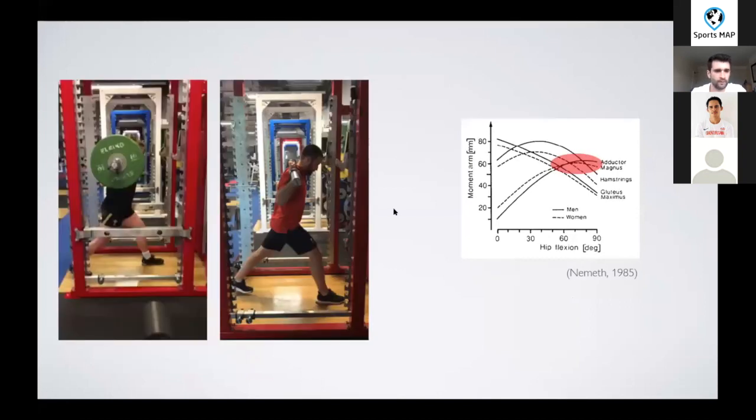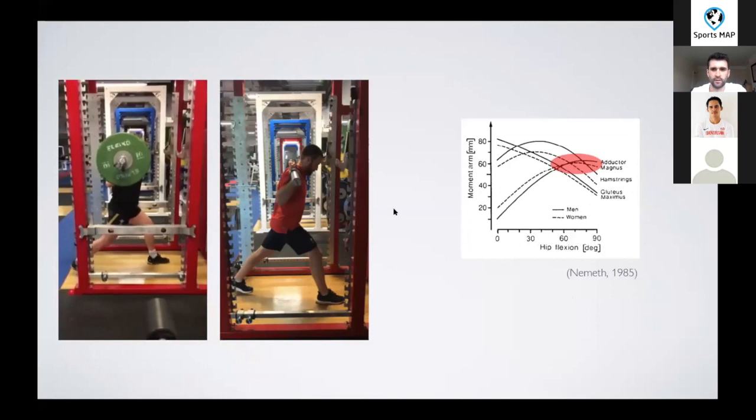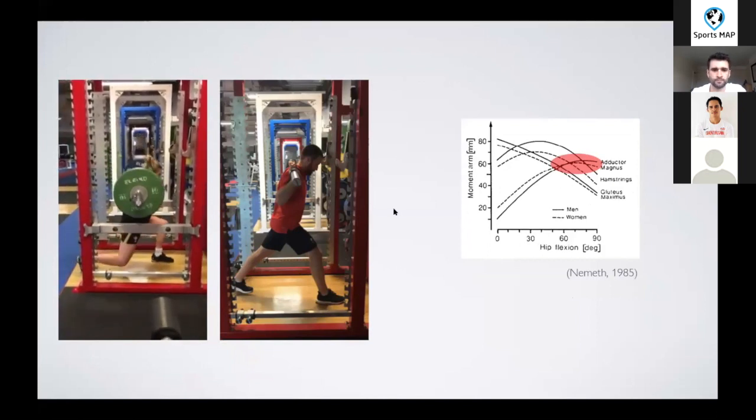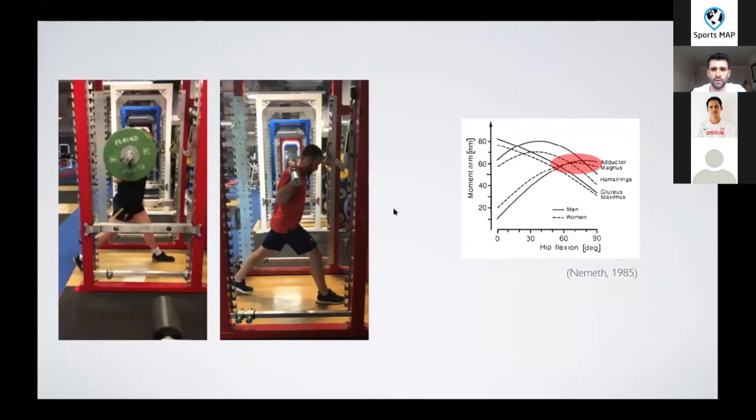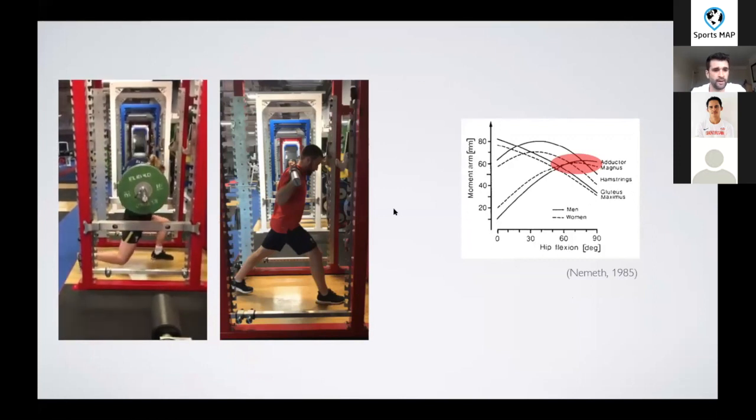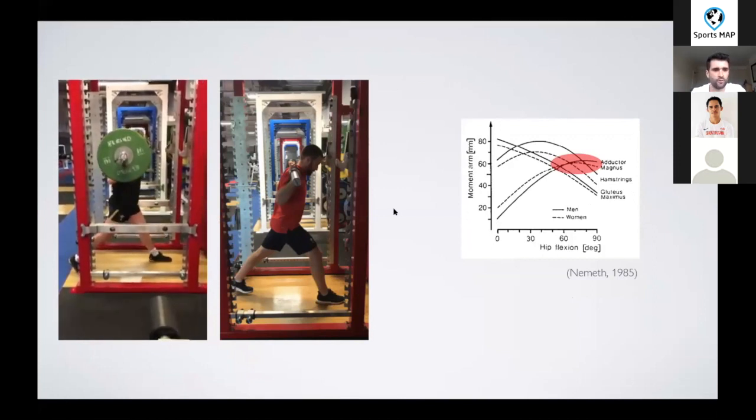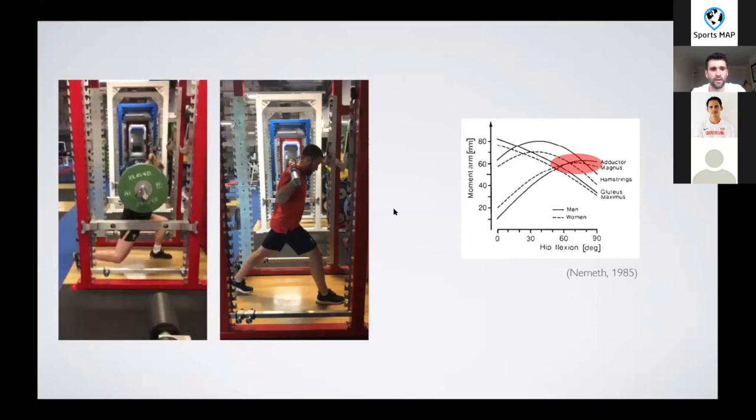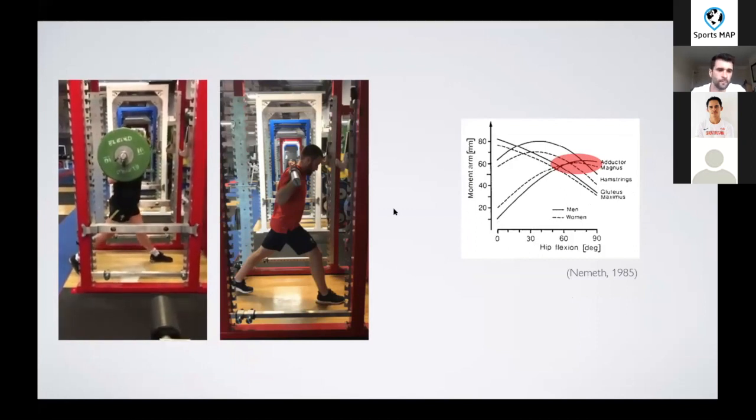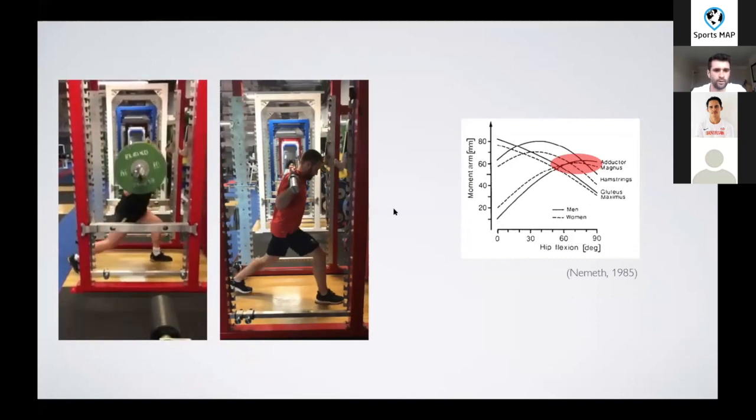So what we can do is in this example on the left, we can increase the hip extension moment arm and at the same time reduce the knee and ankle by lengthening the stance. And then we can also flex the trunk slightly, so we increase the relative hip flexion.